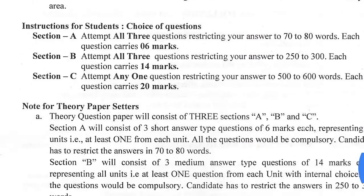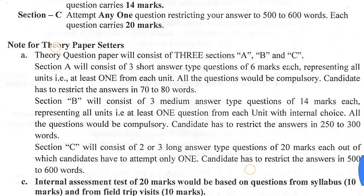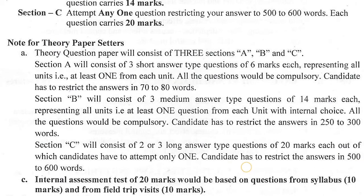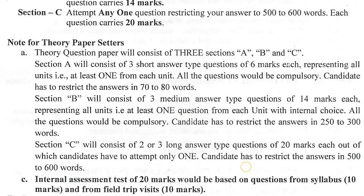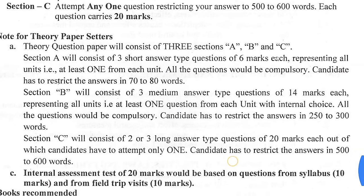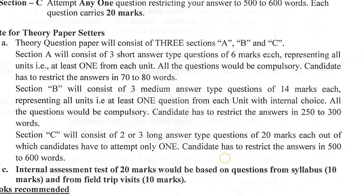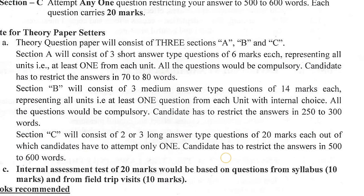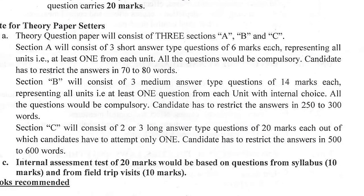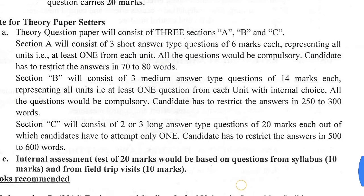The theory question paper will consist of three sections: A, B and C. Section A will have three short answer type questions of 6 marks each, representing all units with at least one from each unit. All questions are compulsory, and candidates must restrict answers to 70 to 80 words. Section B will have three medium answer type questions of 14 marks each, representing all units with at least one from each, with internal choice. All questions are compulsory and answers must be restricted to 250 to 300 words.